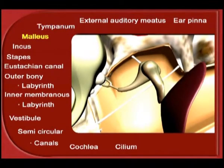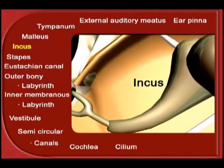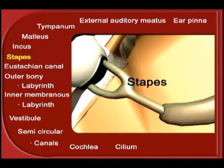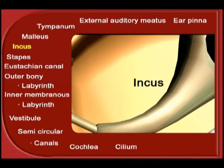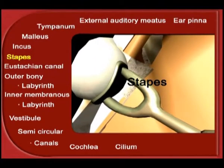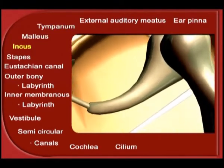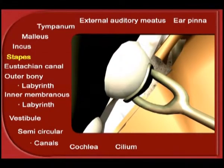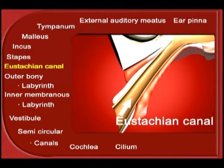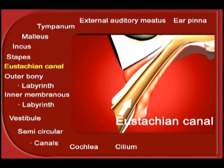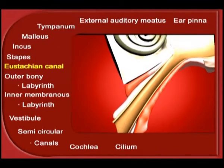The middle ear has three tiny bones called malleus, incus, and stapes. Malleus is hammer-shaped, incus is anvil-shaped, and stapes is stirrup-shaped. The tympanum connects to malleus, malleus to incus, and incus to stapes. The cavity of the middle ear is connected to the cavities of the mouth by a tube called the Eustachian canal. This helps to maintain equal pressure on both sides of the tympanic membrane, which is a must for proper hearing.